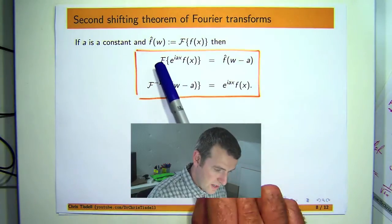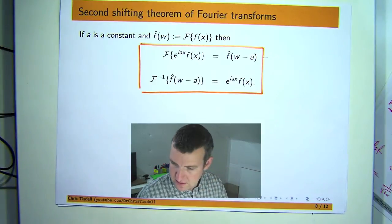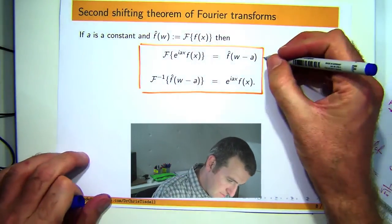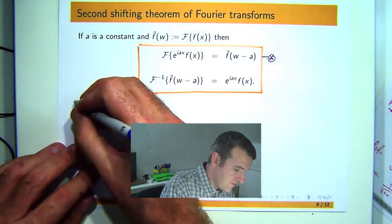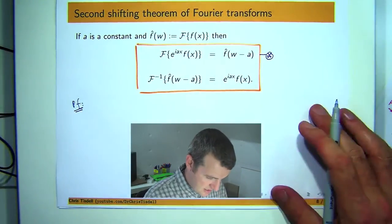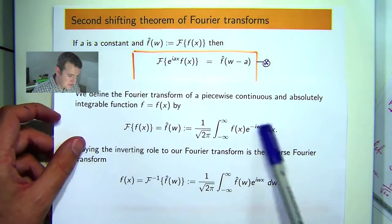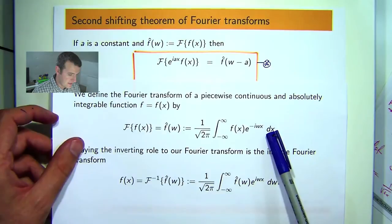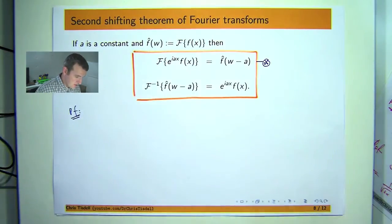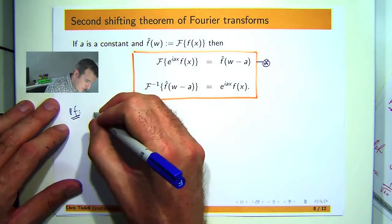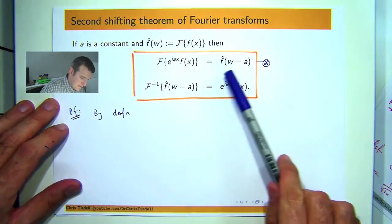I'm just going to show this identity here. So essentially the proof is just about using or applying the actual definition of that transform, and it's relatively straightforward. So let's put this in and transform that and then we'll see if we can come up with this.